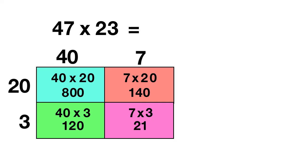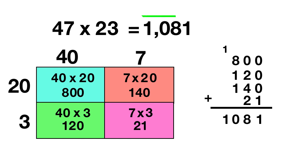Now we just need to add together all of these pieces. 800 plus 120 plus 140 plus 21. When you add that all up, 0 plus 0 plus 0 plus 1 is 1. 0 plus 2 plus 4 plus 2 is 8. 8 plus 1 plus 1 is 10, so you regroup it. But then that 1 is alone up there, so we'll just bring it straight down. 47 times 23 is 1,081.